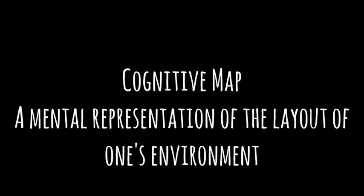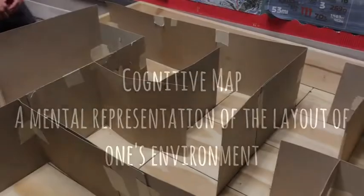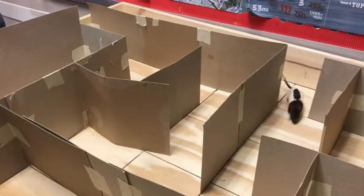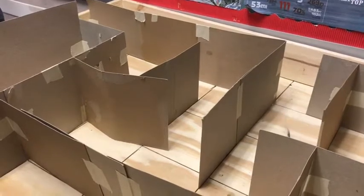A cognitive map is a mental representation of the layouts of one's environment. After exploring the maze, Dora acts as though she has learned a cognitive map of it.